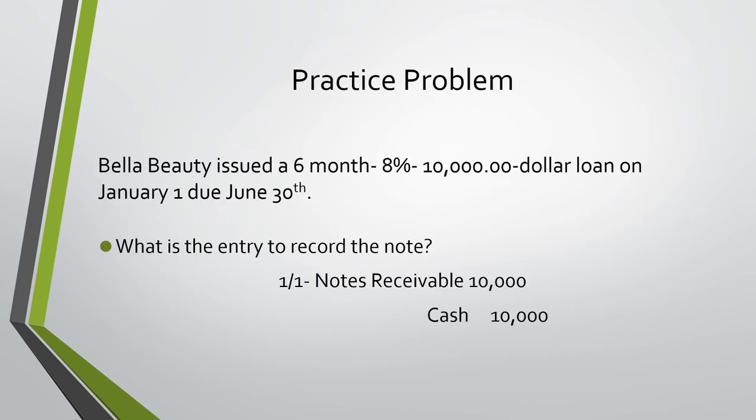In this practice problem, Bella Beauty issued a six-month, eight-percent, $10,000 loan on January 1st, which is due June 30th. What is the entry to record the note? On January 1st, we would record a debit to notes receivable of $10,000 and a credit to cash of $10,000.